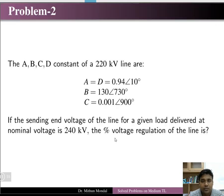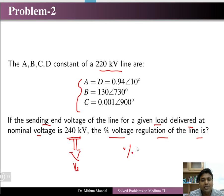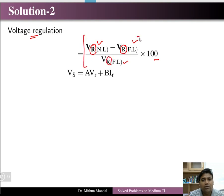Problem 2: Given the ABCD parameters of a 220 kV line, if the sending end voltage for a given load delivered at nominal voltage is 240 kV, find the percentage voltage regulation. The formula is: % VR = (V_no-load − V_full-load) / V_full-load × 100, referenced at the receiving end.